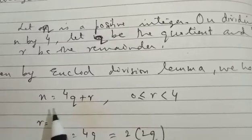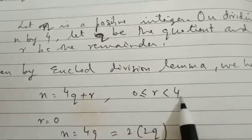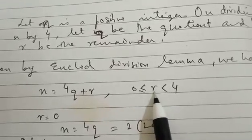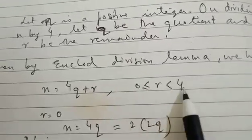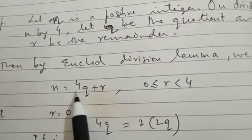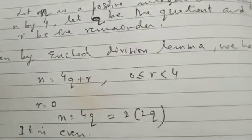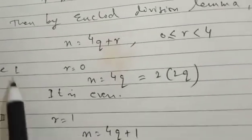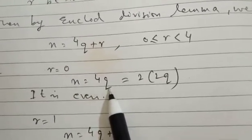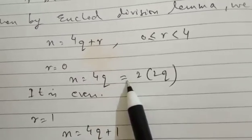Let q be the quotient and R be the remainder. Then by Euclid's division lemma we can express N equal to 4q plus R. The range of the remainder is R greater than or equal to 0 and less than 4, where N is the dividend, 4 is the divisor, q is the quotient and R is the remainder. Now we are going to take different cases.